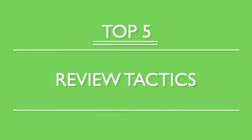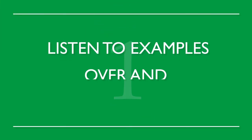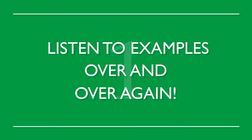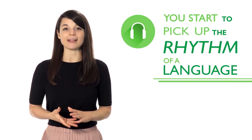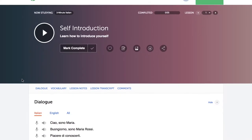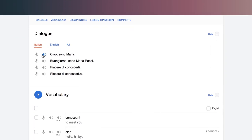To master a new language and understand everything as soon as you hear it — to read with just a quick glance and speak smoothly without thinking — you need to review. Here are our top five review tactics. Number one: listen to examples over and over again. By listening closely and often, you start to pick up the rhythm of a language as well as correct pronunciation from a native speaker. Use our line-by-line feature that lets you both listen and read along.